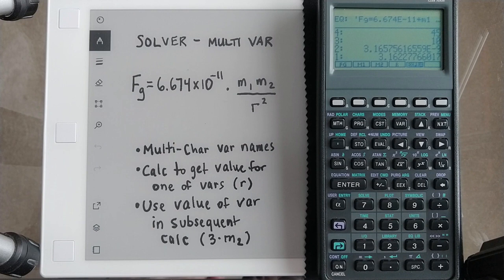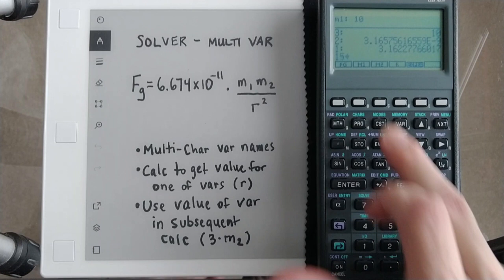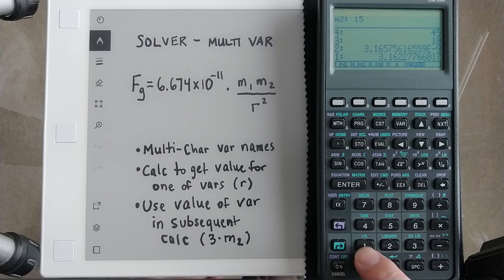So here, let's say our mass 1 was 10 and our mass 2 was 15. And our radius, we didn't know, but we knew it was the square root of 10. So you can just do 10 square root and then store it in R.